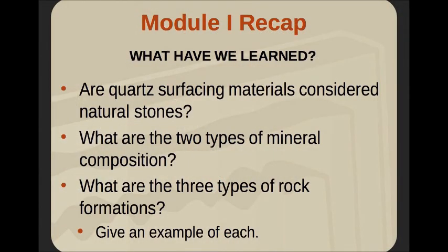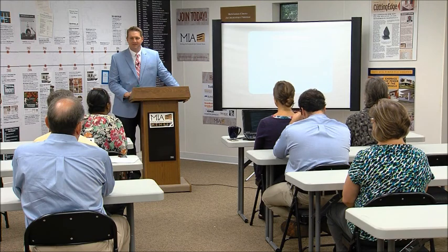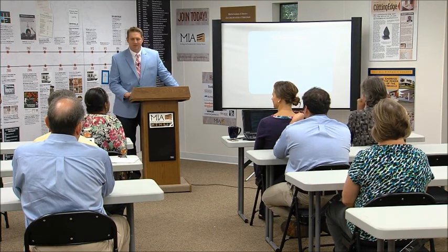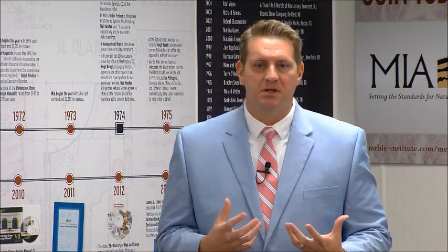Recap — test number one. Are quartz surfacing materials considered natural stones? No. What are the two types of mineral composition? Calcareous and siliceous. Give me three formations and an example of each. Sedimentary — travertine. Metamorphic — marble. Igneous — granite. Very nice. Now that we've gone through Module 1, covering basic formation and basic types of stones, let's get into more specifics about each specific type.